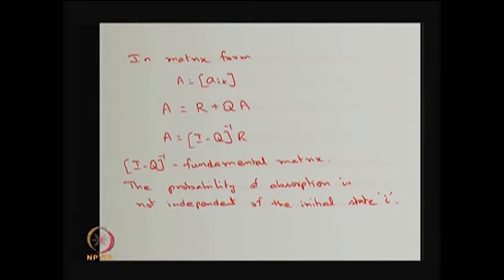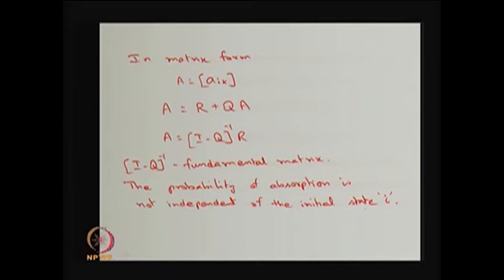Once you find the fundamental matrix multiplied by the R matrix, that gives the probability of absorption starting from a transient state and reaching an absorbing state. This probability is not independent of the initial state — that is very important. Whereas in the previous type of reducible Markov chain the stationary distribution was independent of the initial state, here the probability of absorption depends on the initial state i. We can visualize this through an example to be presented later.